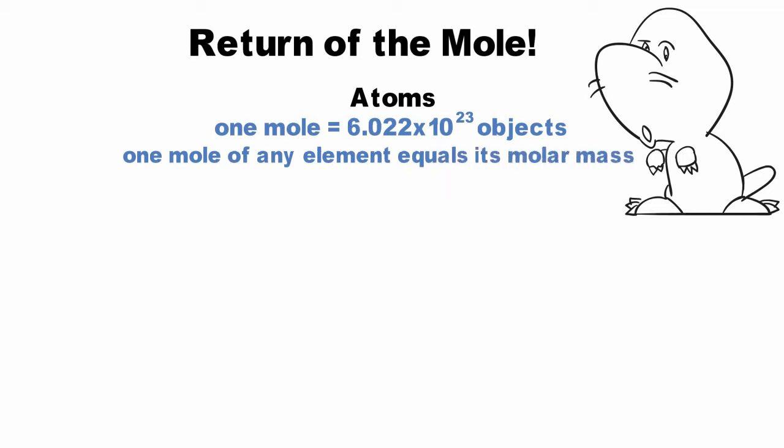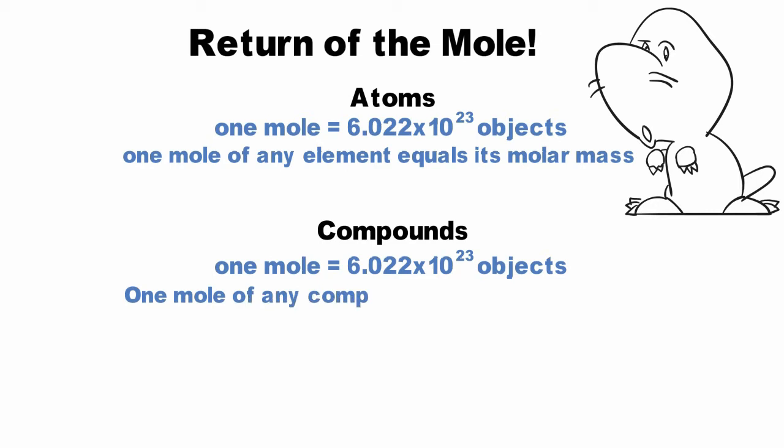But what about compounds? The molar masses of each element are used to determine the molar mass of a compound. So one mole of any compound is equal to the sum of the molar masses of all elements in that compound.